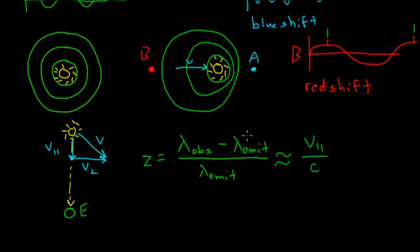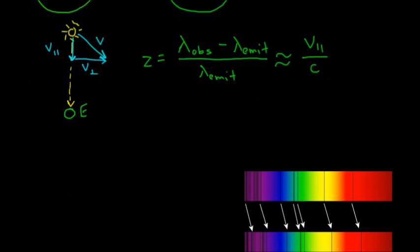If we can find the observed and emitted wavelengths, we can learn about the motion of the source. The observed wavelength at Earth is straightforward — we just measure the light hitting us. But how do we know what wavelength was actually emitted? We can't travel to the star to measure it directly, so how do we get that value?